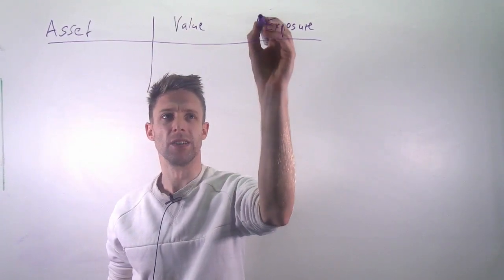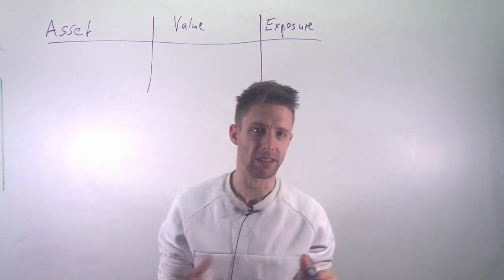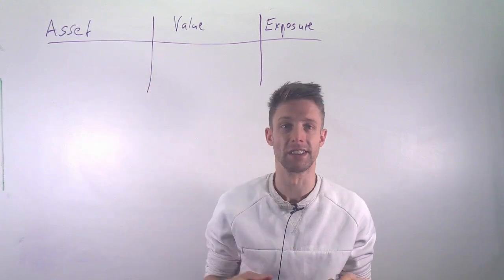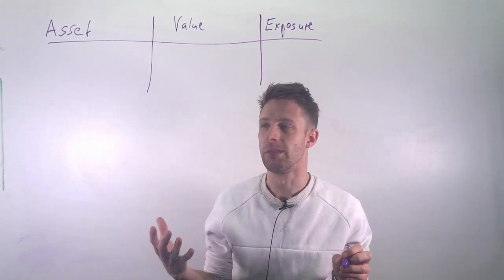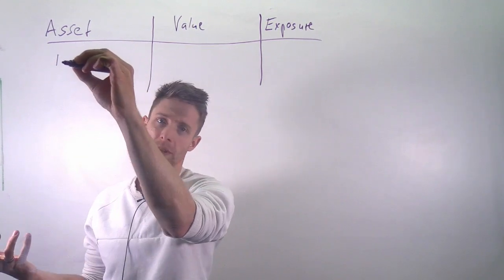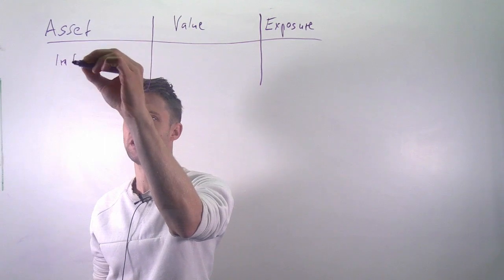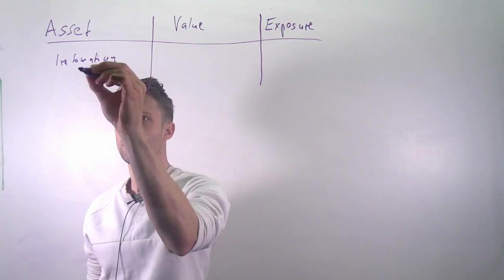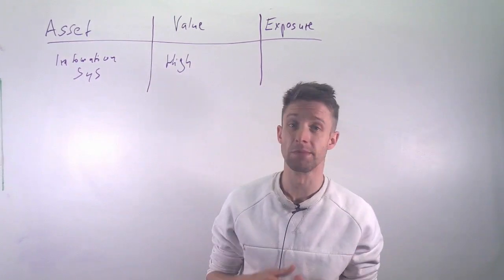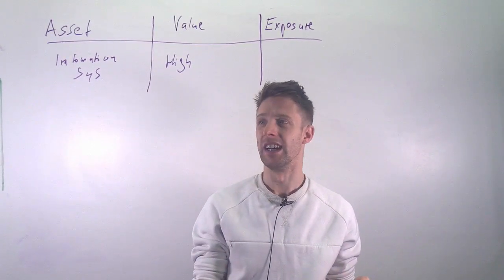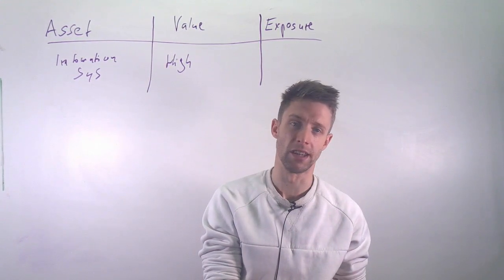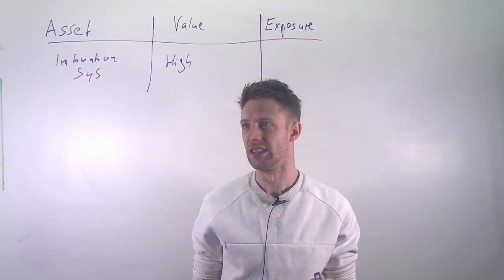And this is essentially a brainstorming activity where you need to sit down with different stakeholders that know about the business and also the technical people that know about the different systems, for example, and need to think about which assets do you have. So you might, for example, have the overall hospital case again, you have the overall information system. Well, this has a very high value because it's needed to run the hospitals. Most hospitals nowadays rely on this. If you don't have it, you can't take up new patients, for example. So this is a serious thing.